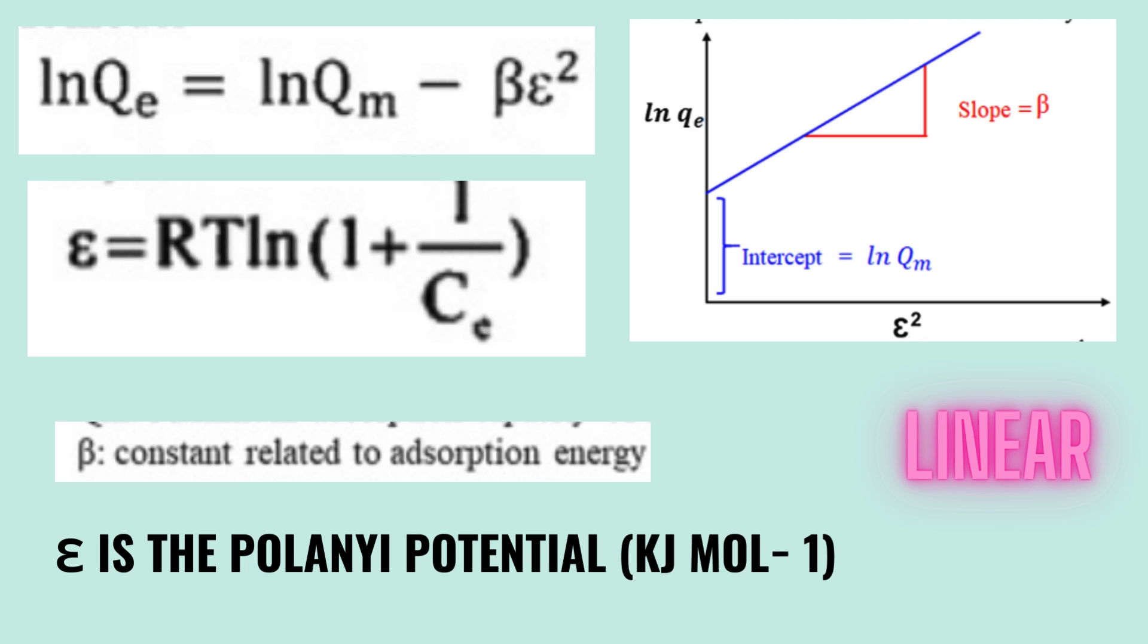So if you fit linear fitting, then you have to convert this epsilon square versus ln Qe, then from slope you can calculate beta and from intercept you can calculate Qm. I have already showed how to fit linear DR isotherm model and the model is described in the description box.